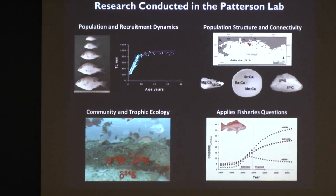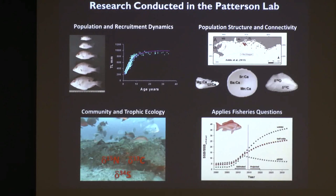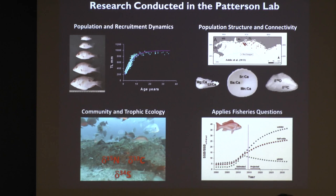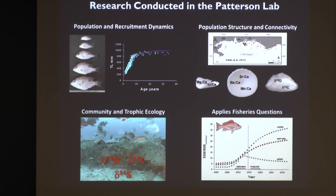We also work on applied fisheries questions — things as mundane as stock assessment, but also challenging assumptions that go into stock assessments: natural mortality of a given fish, which is very difficult to estimate; how selectivity of fishing gear can be estimated empirically and what the implications are; and even things like barotrauma and release mortality. Given the diversity of this audience, I decided the lionfish question would be something you may relate to from local experience, and Chris can also correct me when I make mistakes.